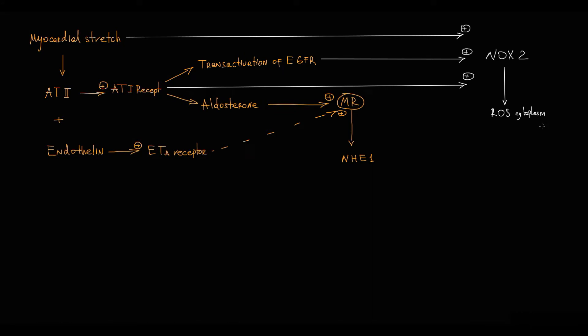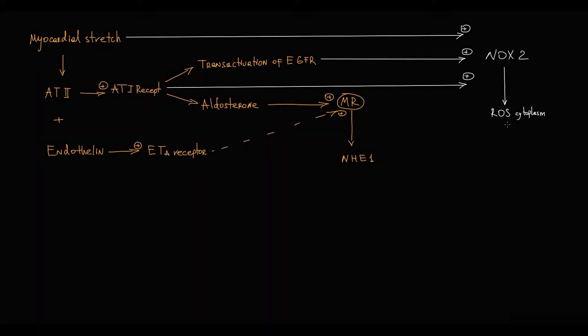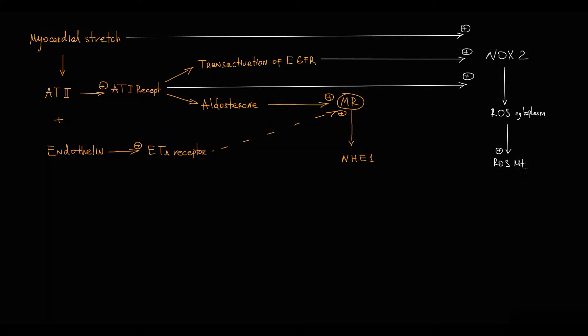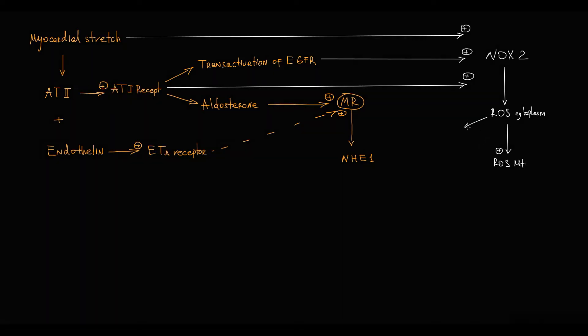Now a very important concept: reactive oxygen species in the cytoplasm stimulate production of reactive oxygen species in mitochondria, with their subsequent release into the cytoplasm. This process is called ROS-induced ROS release.